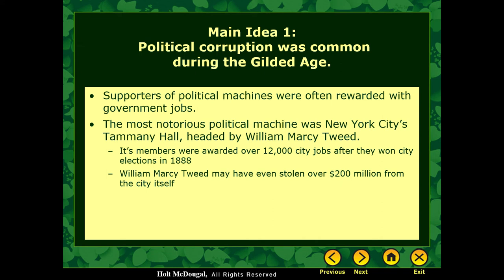The most notorious political machine was New York City's Tammany Hall, headed by William Marcy Tweed. In 1888, the Tammany Hall candidate won office and as a result, 12,000 jobs were awarded to people who had donated to the Tammany Hall political machine — 12,000 jobs for friends, family, relatives, and supporters. They estimate that William Marcy Tweed may have stolen over $200 million from the city by giving contracts for $1 million to his friends for jobs that cost $500,000, with the leftover money donated back to Tammany Hall. It was corruption and money laundering.